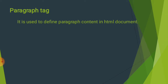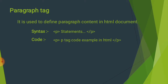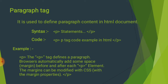Paragraph Tag: It is used to define paragraph content in an HTML document. P-Tag open करेंगे, paragraph लिखेंगे, P-Tag close करेंगे, और browser पर display कराएंगे। Syntax: P-Tag लिखे, Statement लिखे, P-Tag close करें। Code example में P-Tag चालू किया, 'P-Tag Code Example in HTML' लिखा, P-Tag close किया। इस प्रकार का code अपने HTML Editor पर लिखेंगे।